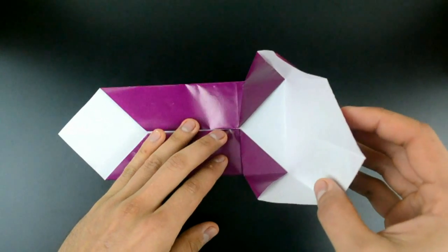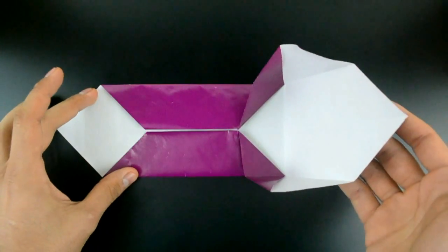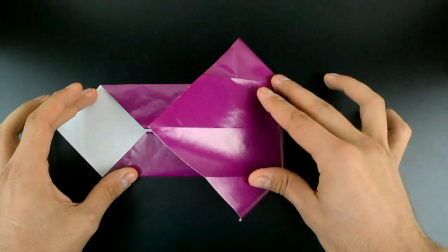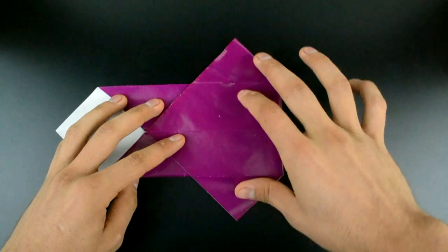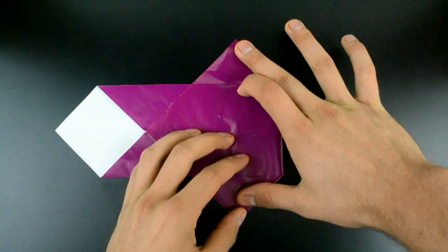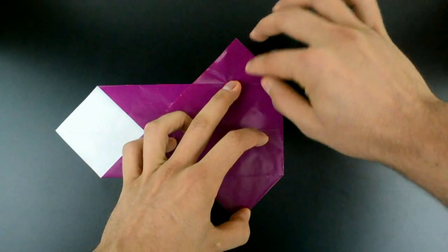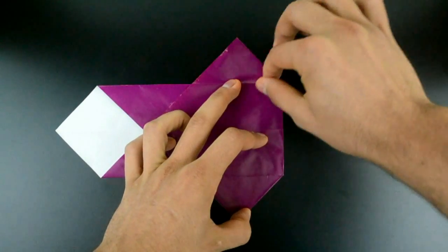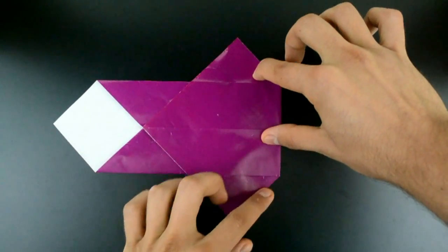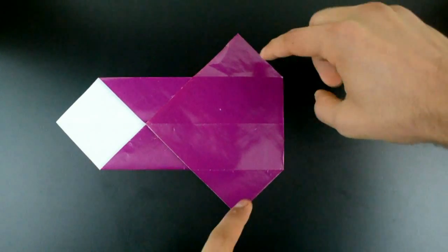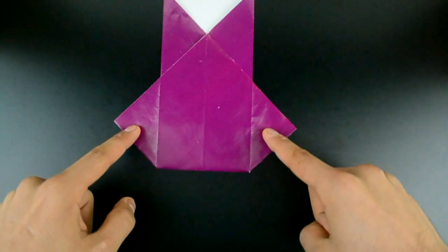Now bring the right side to the left and flatten the paper giving this shape. Turn the paper in this position.